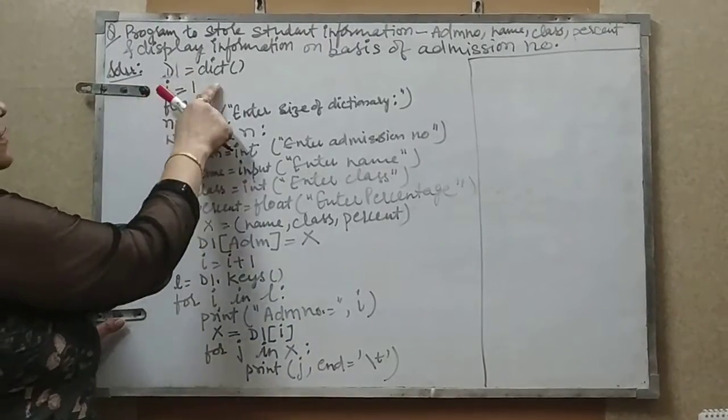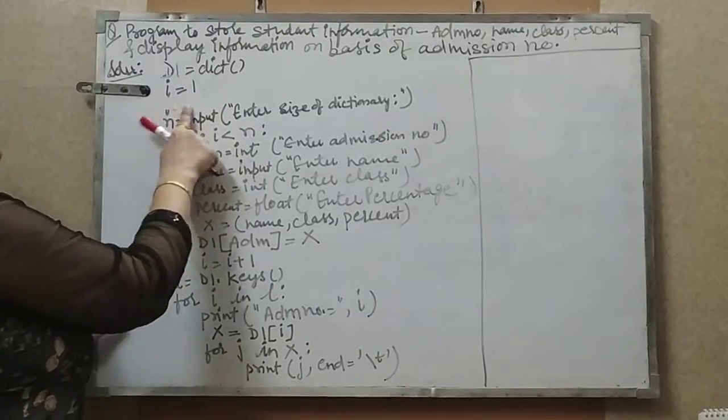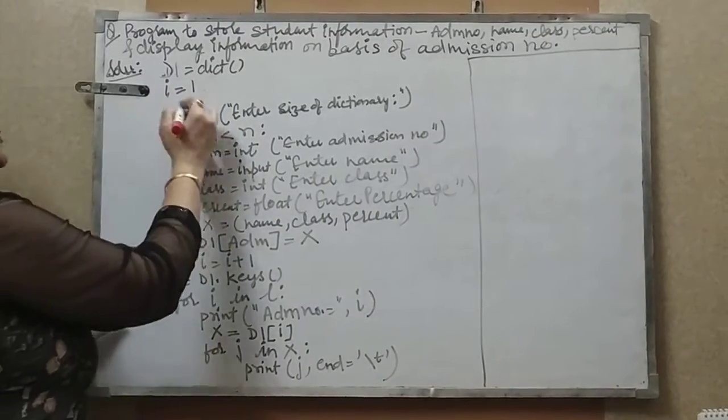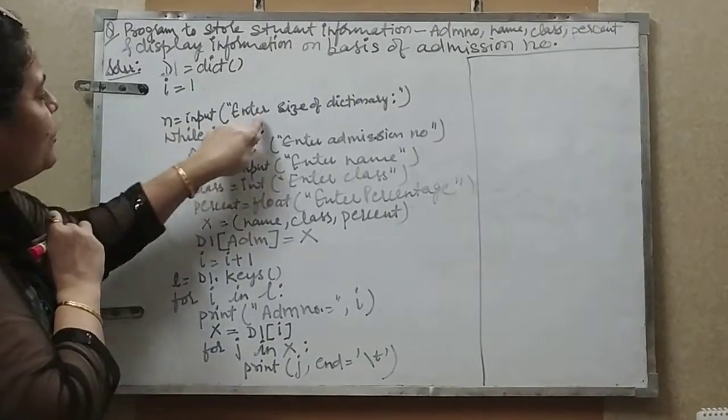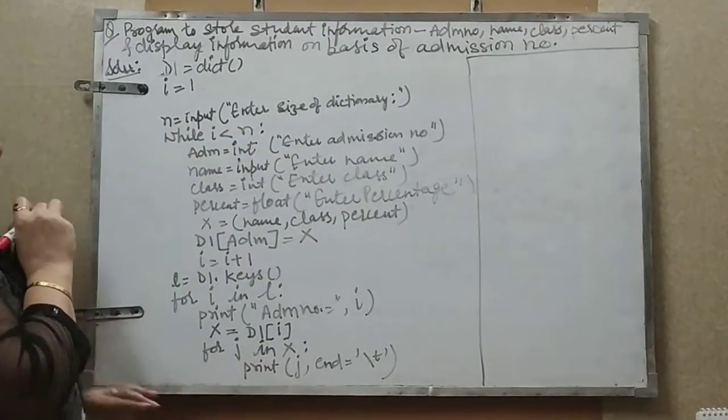I have taken i equals 1, and no need of taking the flag here because we are not using any flag value. So i equals 1, N equals input enter size of the dictionary.